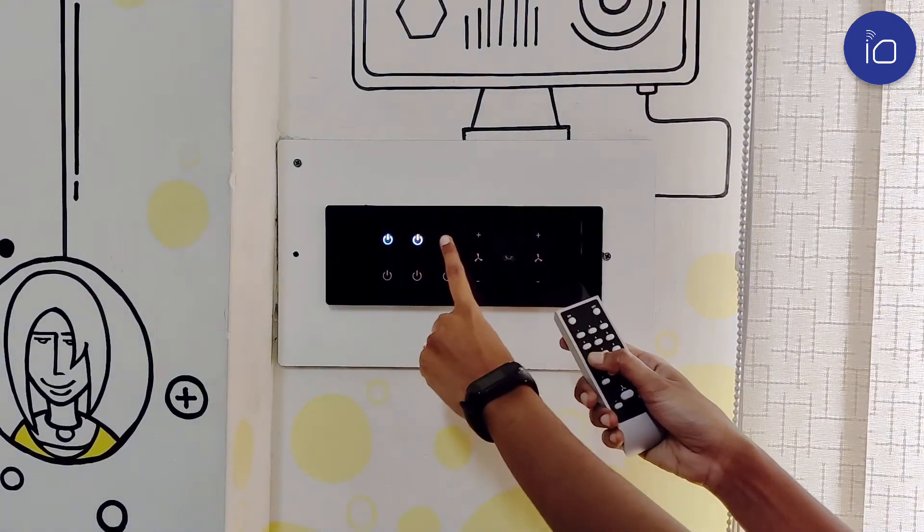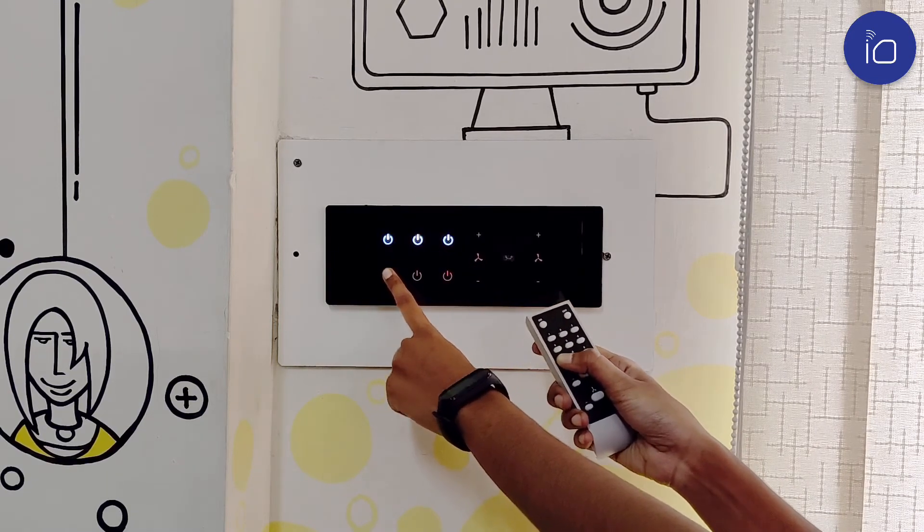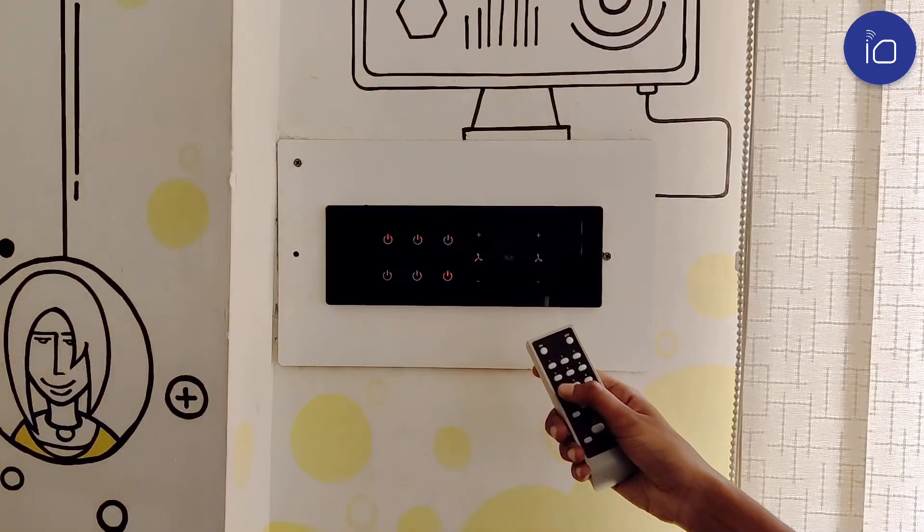Just press and hold the switch and the button on the remote for a few seconds to pair them. When you press that button, different switches will turn on and off at the same time.